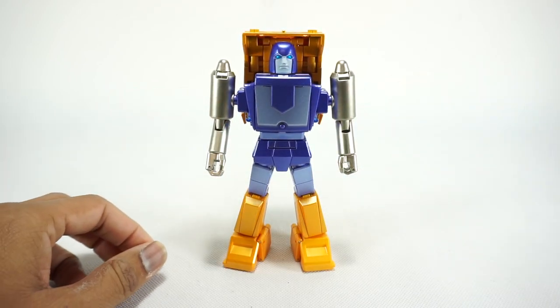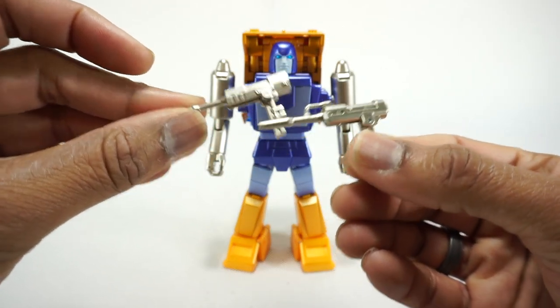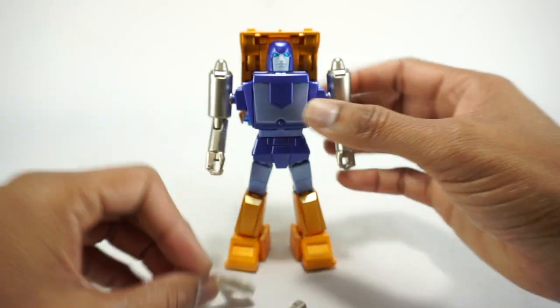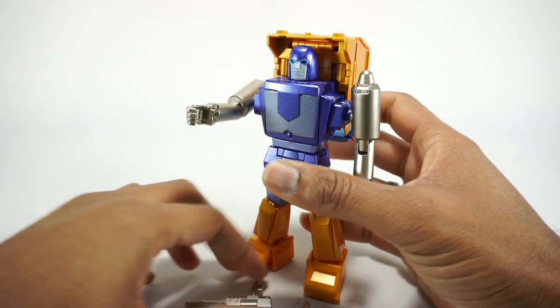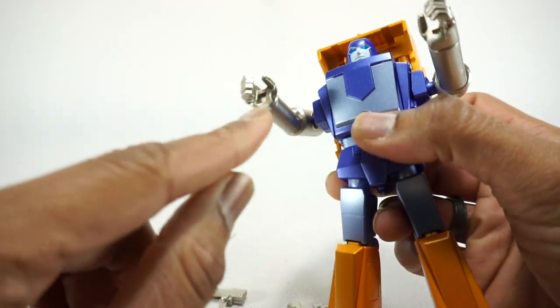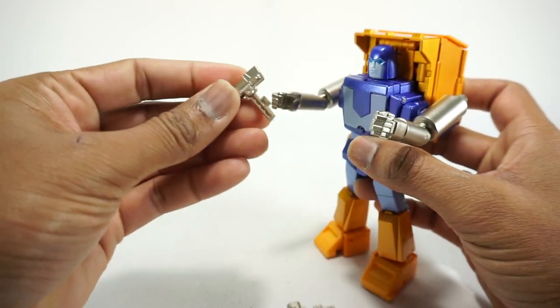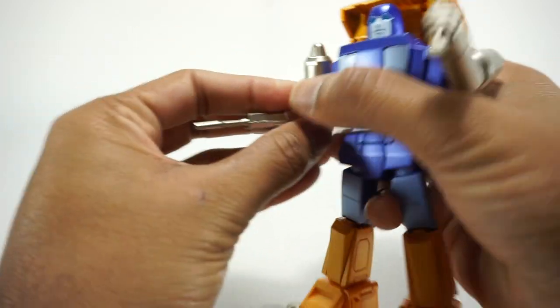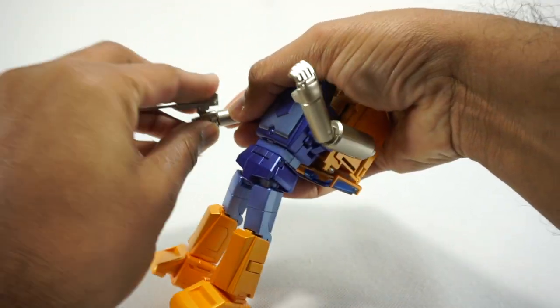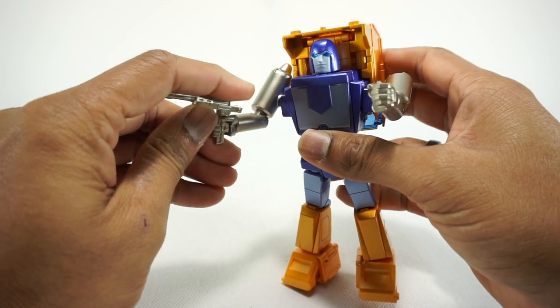He does come with some accessories, so you do get two guns like this and they're both sculpted and painted very nicely. I really like how these look. I found on my copy and it looks like every copy of this guy, the right hand is misshapen and there's a little slot there for the tab on the back of the gun. It does not go in unfortunately. It either is misshapen or miss molded, but no matter how you push it doesn't really go in.